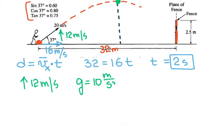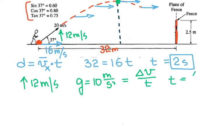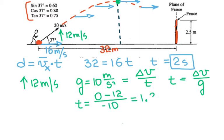The vertical velocity changes because gravity acts on the ball, slowing it as it goes up until it stops and falls back down. To find the time to reach the top: acceleration equals change in velocity over time, so time equals change in velocity over acceleration. Time to the top equals final vertical velocity (0) minus initial vertical velocity (12), divided by negative 10, giving 1.2 seconds.